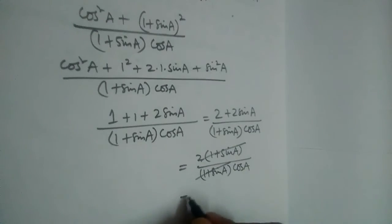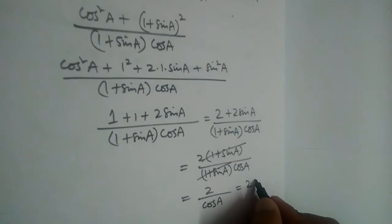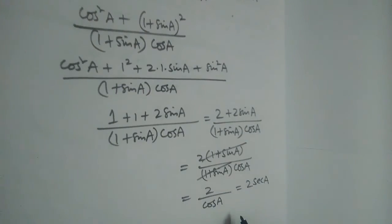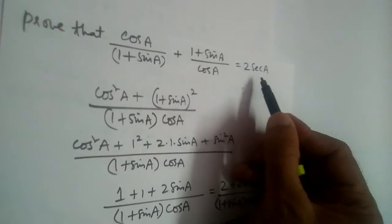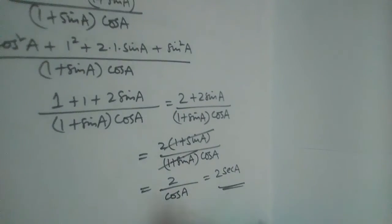1 plus sine A and 1 plus sine A will get cancelled, so 2 by cos A. It will be 2 into 1 by cos A, which is equal to secant A. Right? So we needed to prove 2 secant A, and we got 2 secant A.